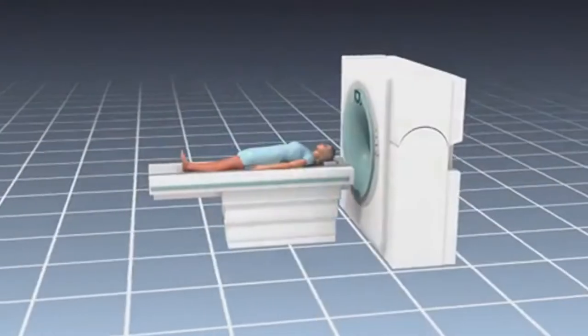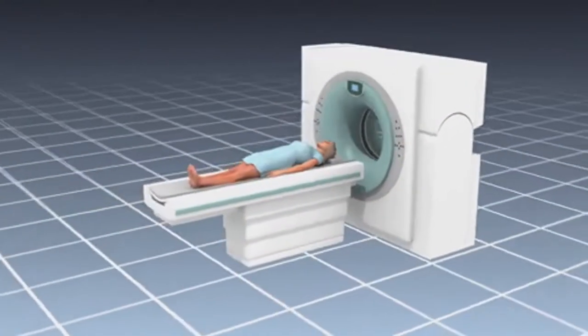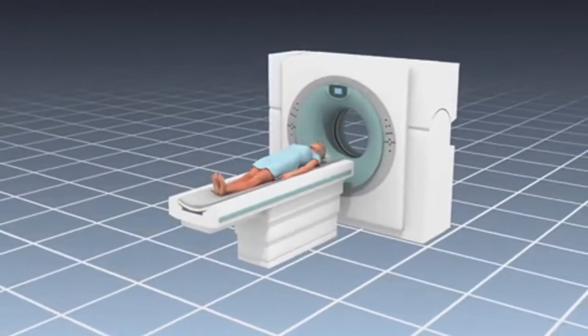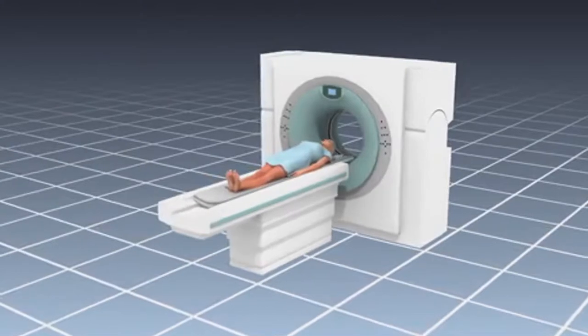It works like this. A patient generally lies on a flat bed that passes through the hollow middle of a device that looks like a giant square donut.